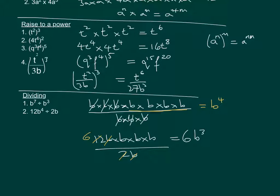The general rule is: if we have a number to the power of something divided by a number to the power of something else, we get that number to the power of the first power minus the second.